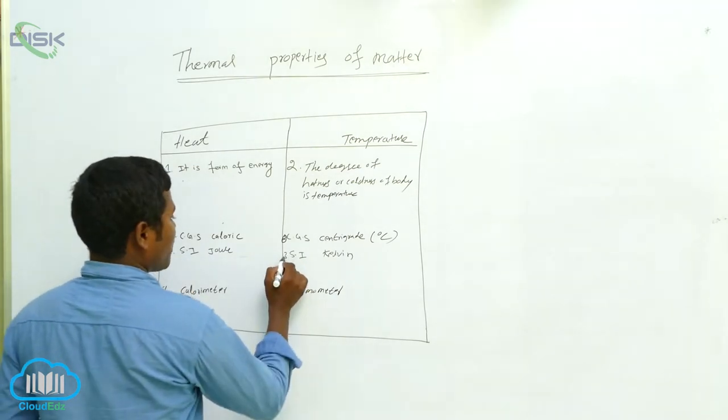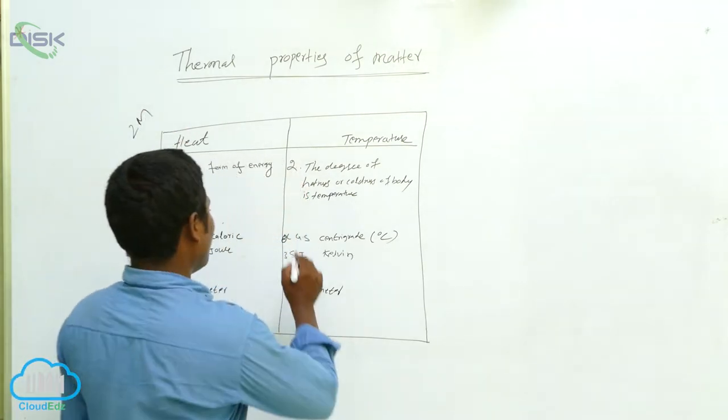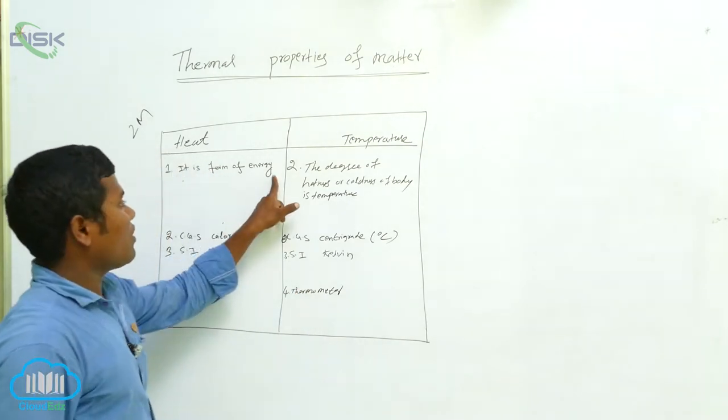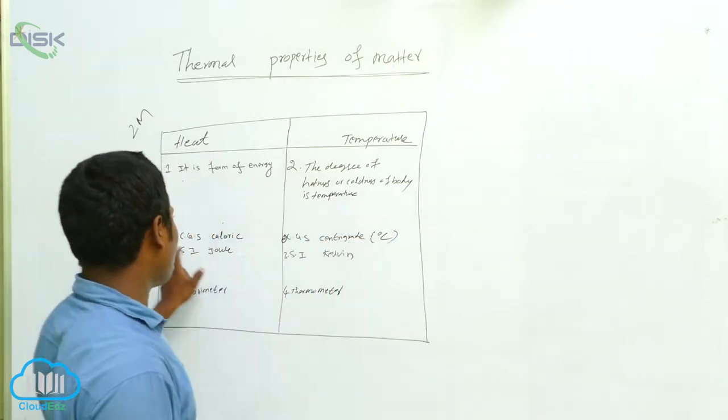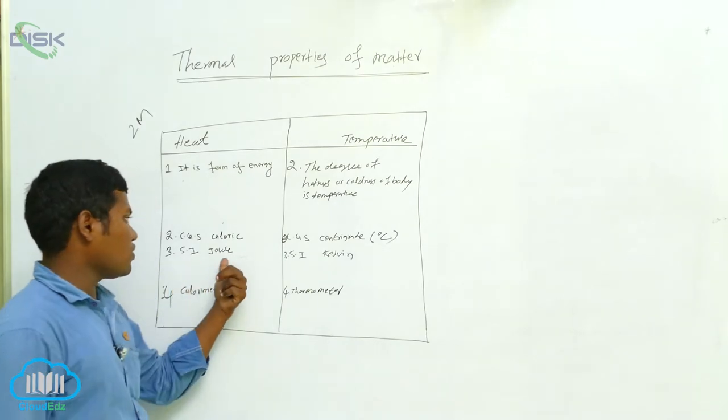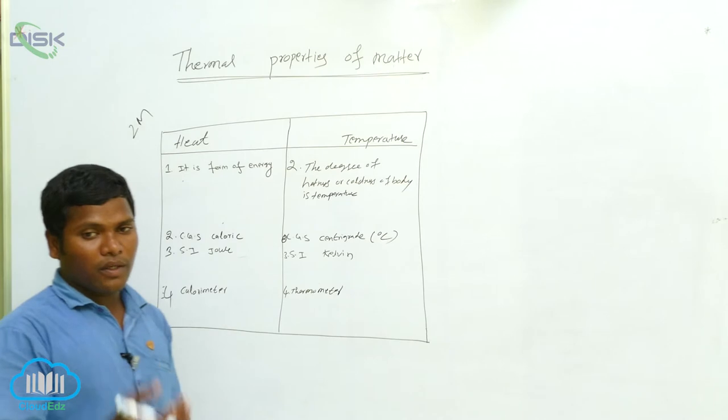Point. Why? Because you will get this as a two marks question: write the differences between heat and temperature. Next, this is third one, this is fourth one. Okay, first one is it is a form of energy. Next, this side, the degree of hotness coldness, we are calling the temperature. Next, CGS: calories. Next, CGS: centigrade. Again, this side, SI is equal to Joule. Again, SI: Kelvin. Next, this - how we are measuring? By which measurement are you measuring the.